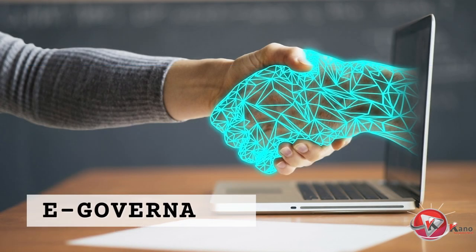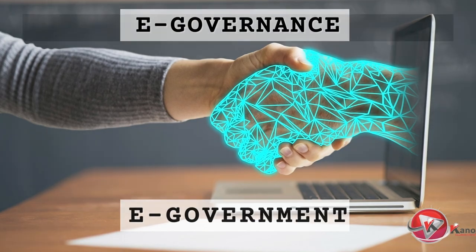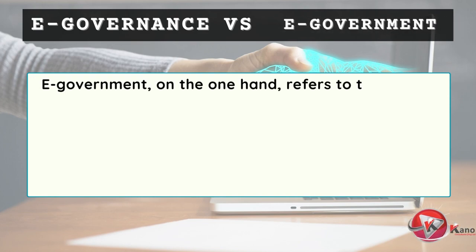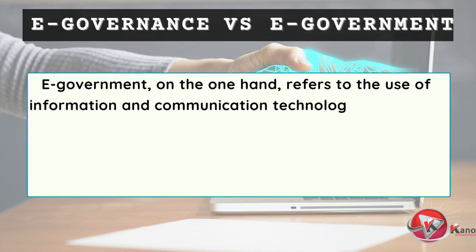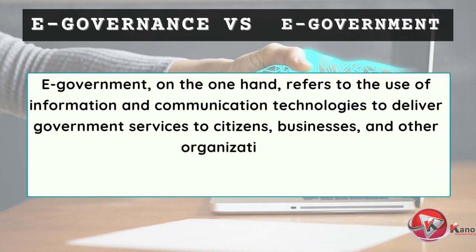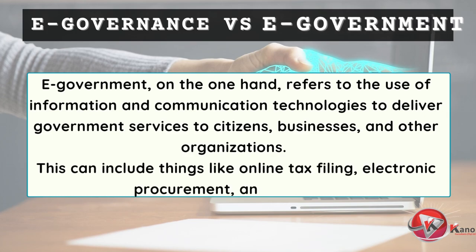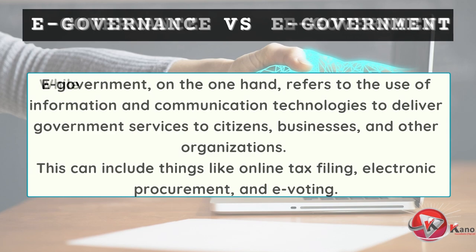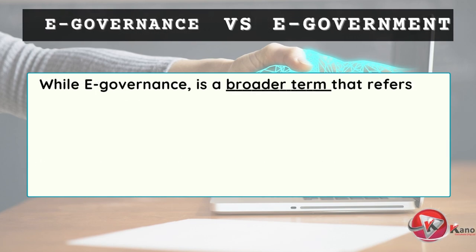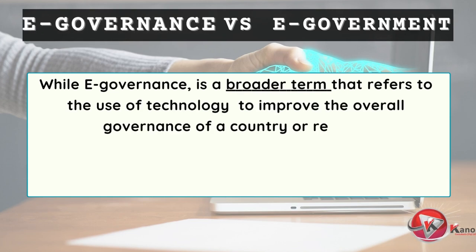The term e-governance is often used interchangeably with the term e-government. Although there may be similarities between the two terms, there are subtle differences between the two. E-government, on the one hand, refers to the use of information and communication technologies to deliver government services to citizens, businesses, and other organizations. This can include things like online tax filing, electronic procurement, and e-voting. While e-governance is a broader term that refers to the use of technology to improve the overall governance of a country or region.